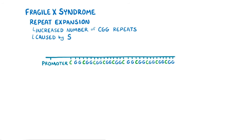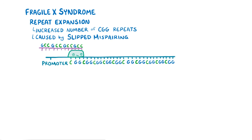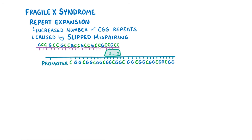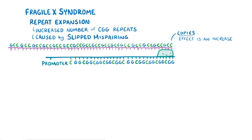This repeat expansion is caused by slipped mispairing, which is where the enzyme DNA polymerase gets confused when copying a repetitive sequence. DNA polymerase loses its place among the FMR1 triplet repeats and goes back to recopy what it already just copied. This is like getting lost in a video and watching the same part over and over, but since DNA polymerase is making copies, the effect is an increase or expansion of the number of repeats.